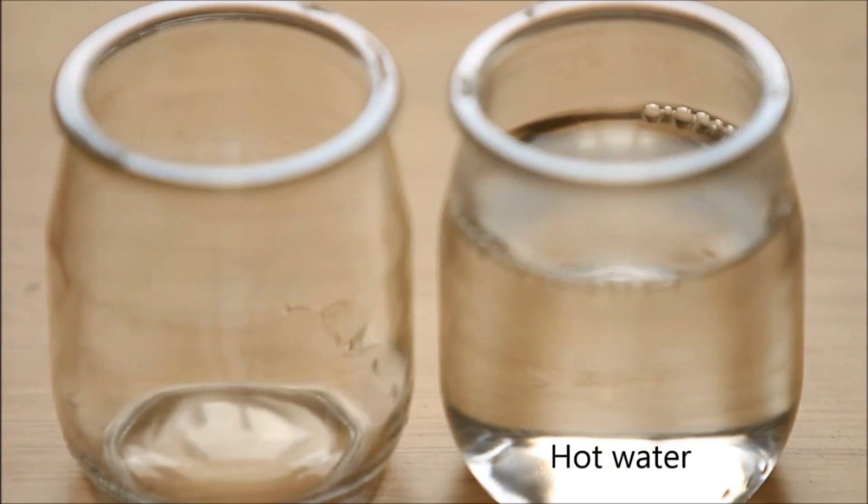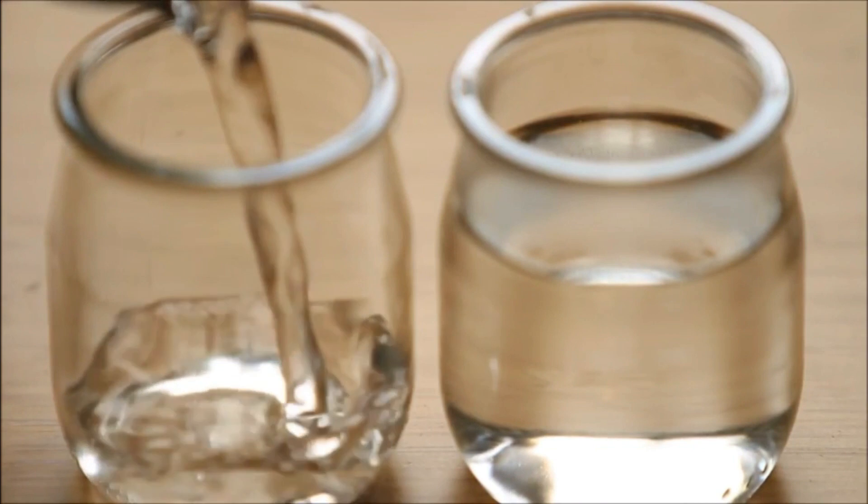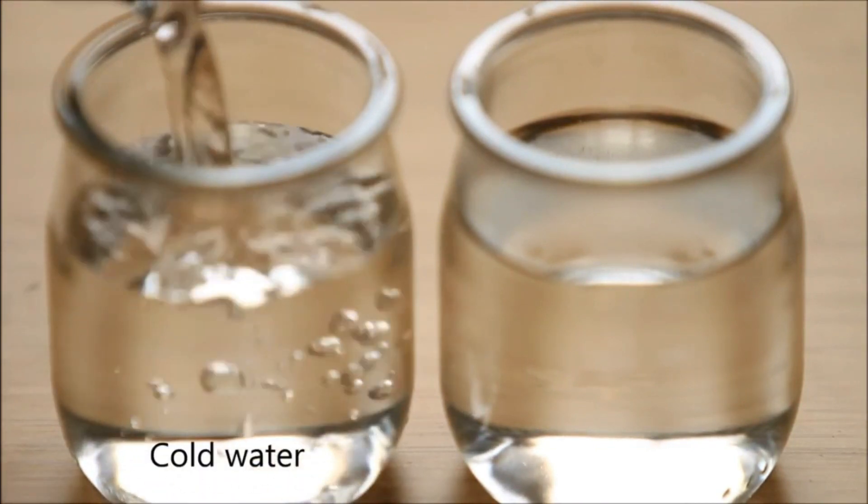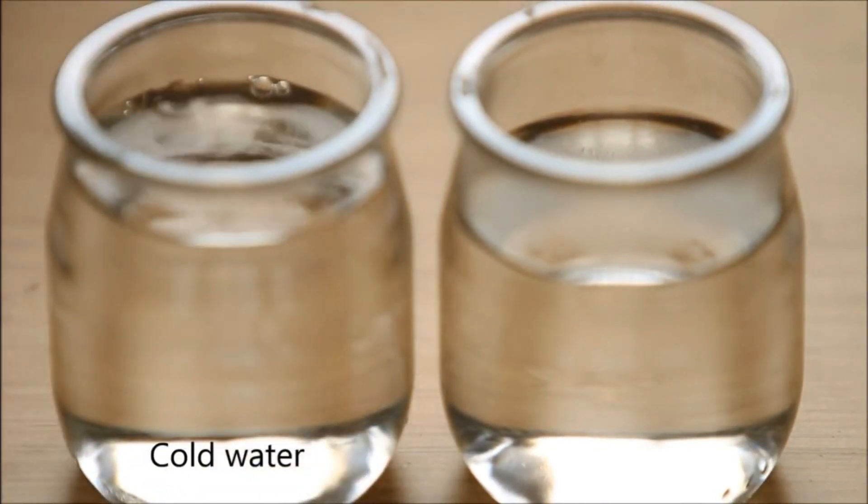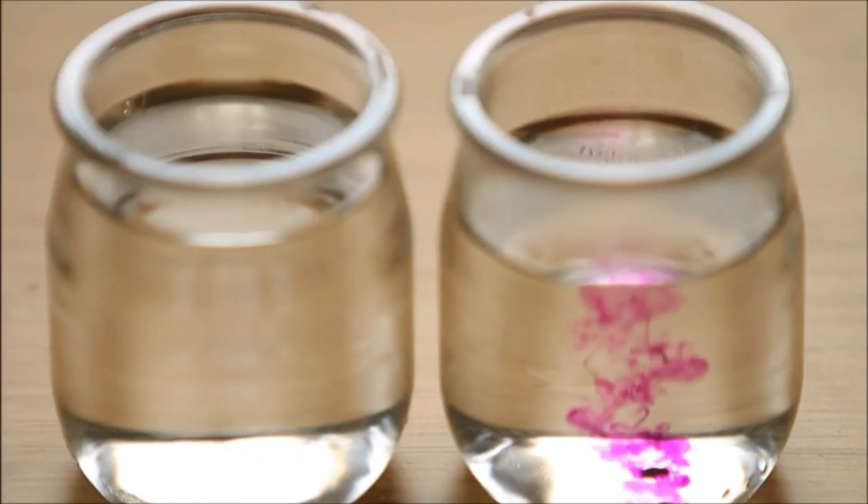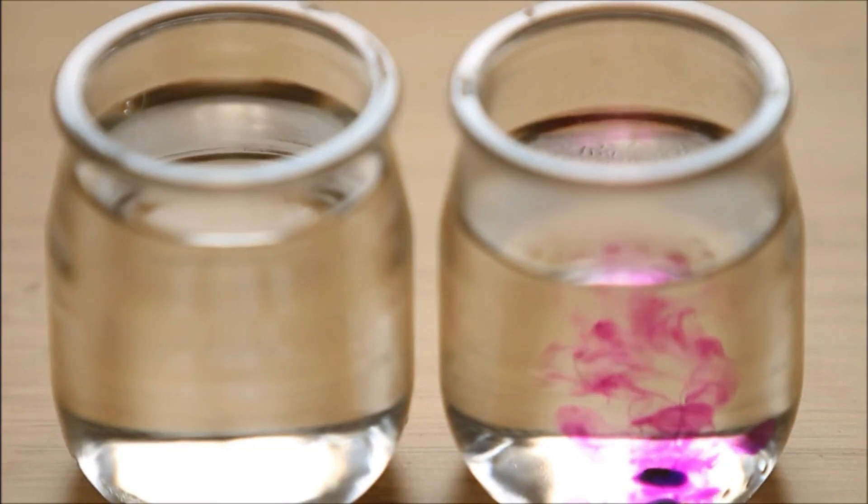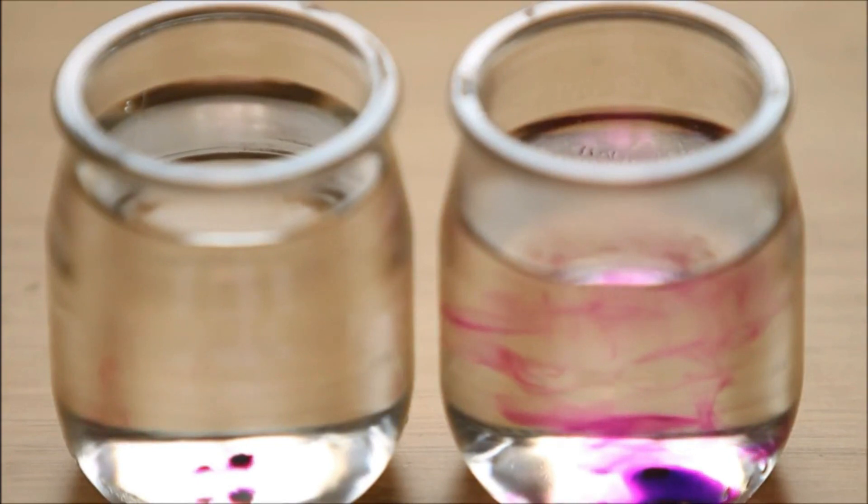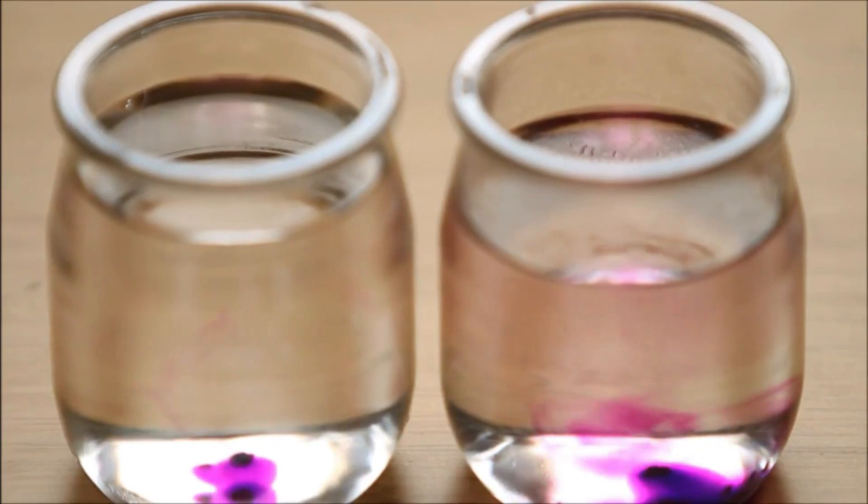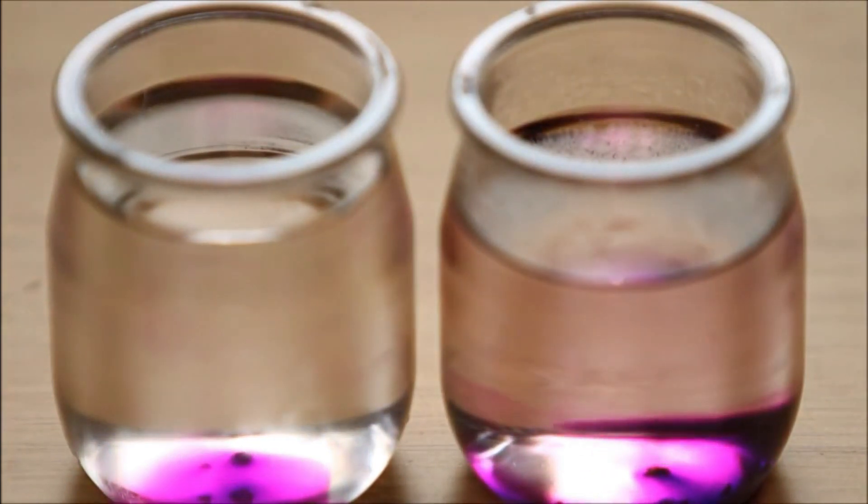Label two beakers A and B respectively. Have them standing beside each other. To beaker A, add some room temperature water. And to beaker B, carefully add some hot water. Now, to each beaker, add equally weighed portions of the potassium permanganate crystals. Then wait a few minutes and observe.